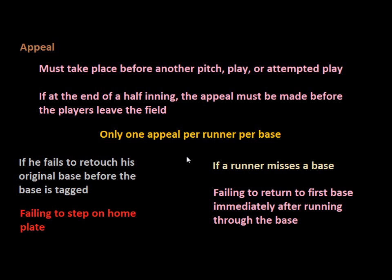We know that in most circumstances, when there are two outs in an inning and a fielder gets the ball and quickly tags out two runners, that's not technically a double play. As soon as the first runner is tagged out, that would be the third out in the inning, and the next tag is irrelevant — he would not be the fourth out.